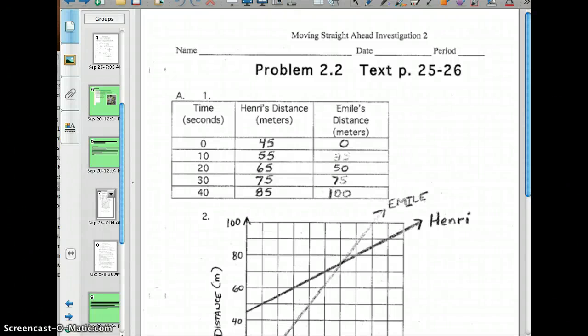Hi class, we're looking at problem 2.2, the problem with Henry and Emil and their little walking race.